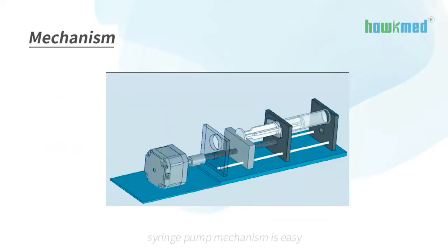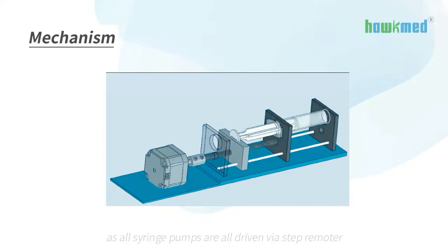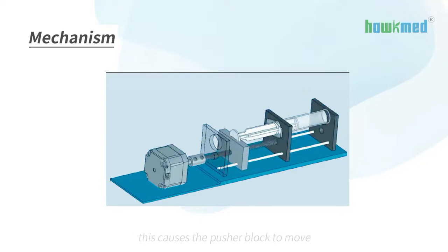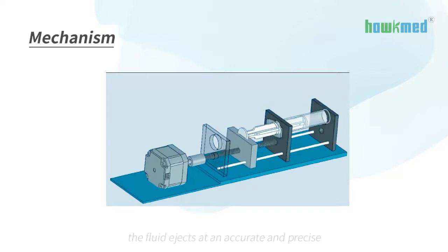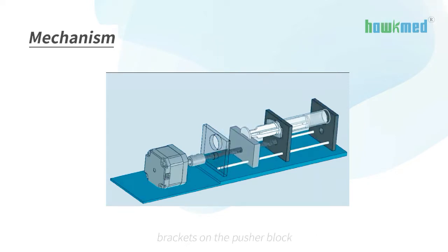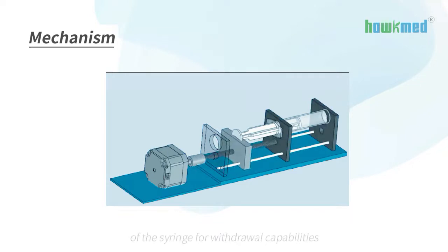Syringe pump mechanism is easy, as all syringe pumps are driven via a stepper motor and a lead screw threaded through a pusher block, which precisely turns the pump's stepper motor. This causes the pusher block to move. The fluid ejects at an accurate and precise rate during syringe pump mode, when the pusher block pushes against the plunger of a secured syringe. Brackets on the pusher block hold the plunger of the syringe for withdrawal capabilities.